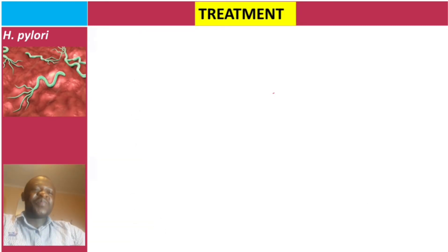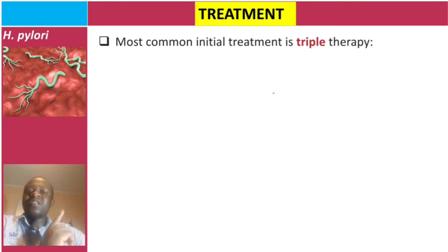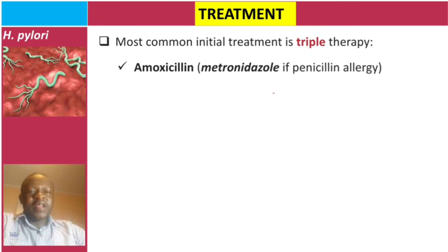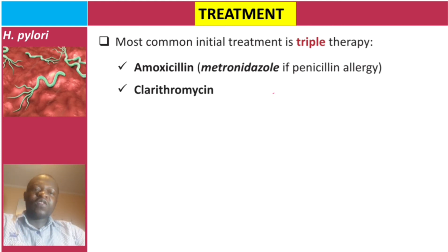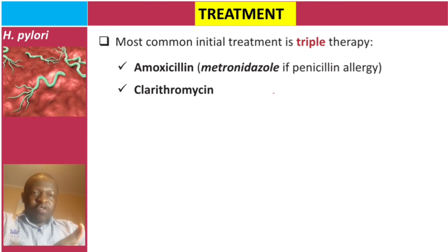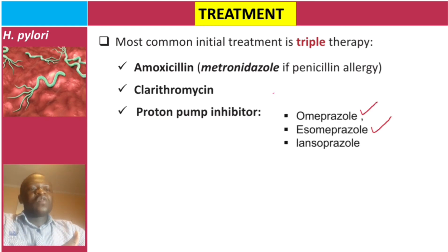Treatment of H. pylori is straightforward. The most common initial treatment is triple therapy: two antibiotics and one proton pump inhibitor. The first antibiotic is amoxicillin, but if the patient is allergic to penicillin, we give metronidazole instead. The second drug is a macrolide — clarithromycin. Proton pump inhibitors used include omeprazole, esomeprazole, or lansoprazole.